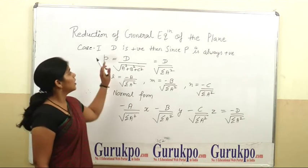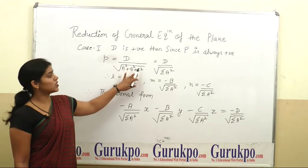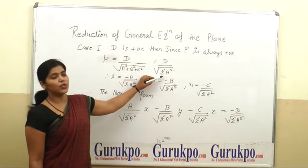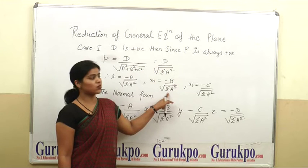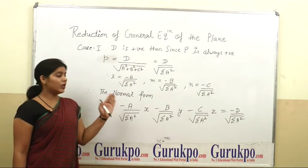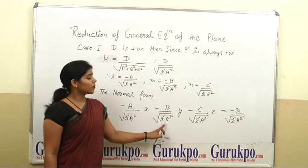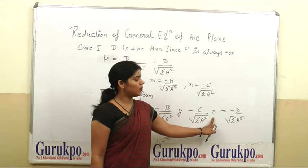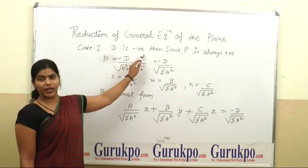Now, Case 1: If D is positive, then since P is always positive, we can write P is equal to D upon square root of A square plus B square plus C square, or D upon square root of summation of A square. Therefore, L will be minus A upon square root of summation of A square, M is equal to minus B upon square root of summation of A square, N is equal to minus C upon square root of summation of A square. Therefore, the normal form will be: minus A upon square root of summation of A square multiplied by x, minus B upon square root of summation of A square multiplied by y, minus C upon square root of summation of A square multiplied by z, is equal to minus D upon square root of summation of A square.